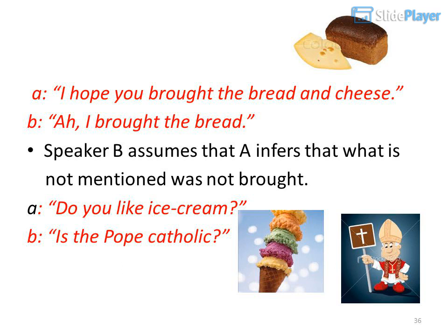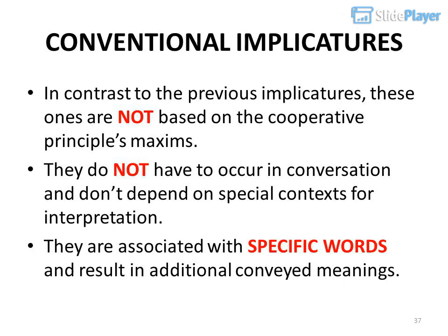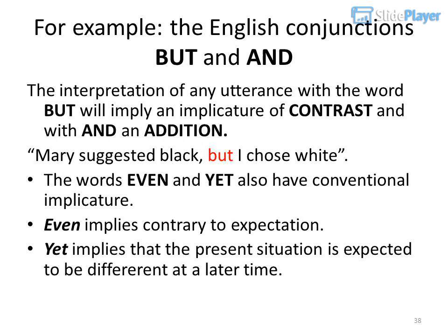Another example: A: 'Do you like ice cream?' B: 'Is the Pope Catholic?' Conventional implicatures, in contrast, are not based on the cooperative principle's maxims. They do not depend on special contexts for interpretation and are associated with specific words. For example, the English conjunction 'but' implies contrast and 'and' implies addition. The words 'even' and 'yet' also have conventional implicature: 'even' implies contrary to expectation, and 'yet' implies the present situation is expected to be different at a later time.